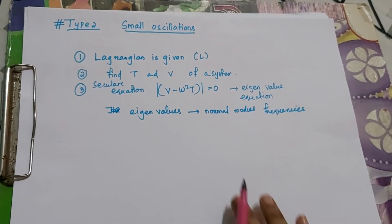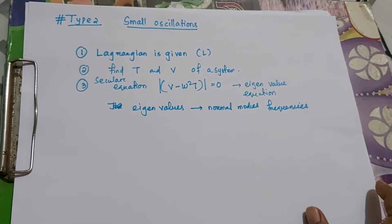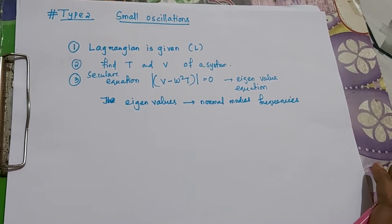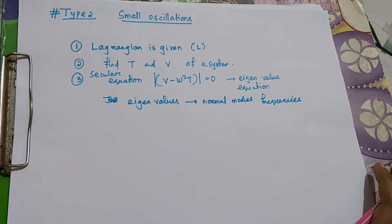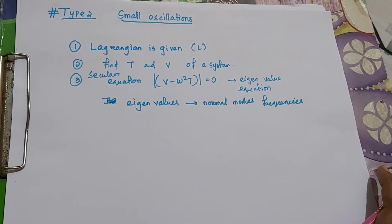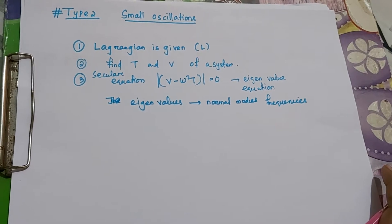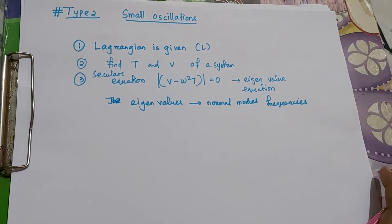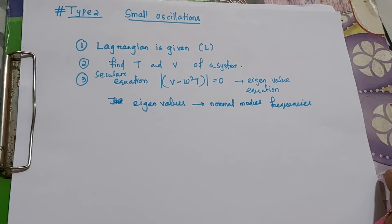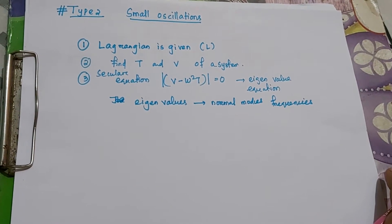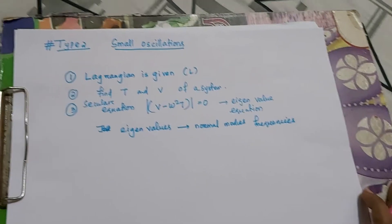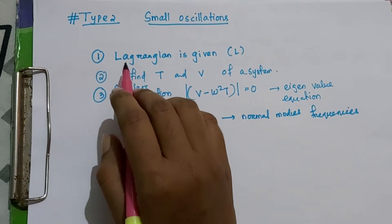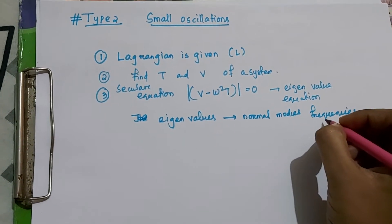Hello everyone, welcome back to our channel. As discussed in the last video, we are going to solve the type of questions which are more expected from the small oscillations topic in CSIR NET. The first part — Type 1, where the potential is given and we find frequencies or time period — we have already discussed. Now we will discuss Type 2 from the small oscillations part: finding normal mode frequencies.